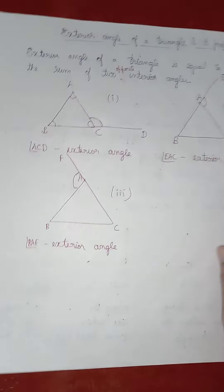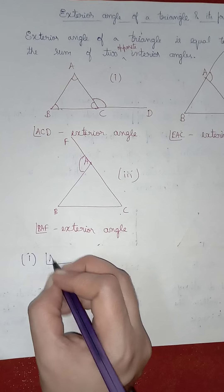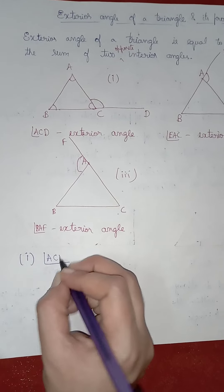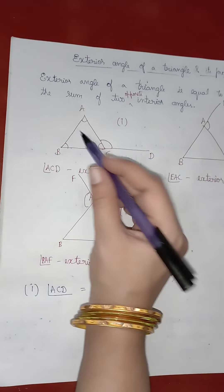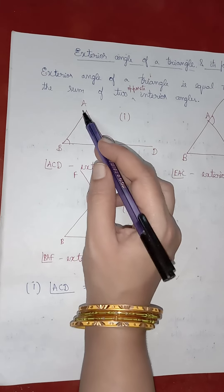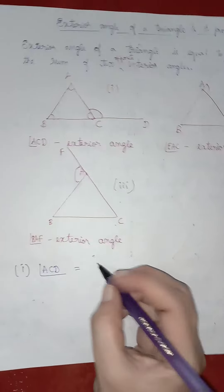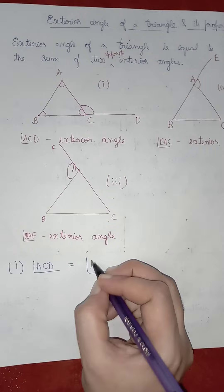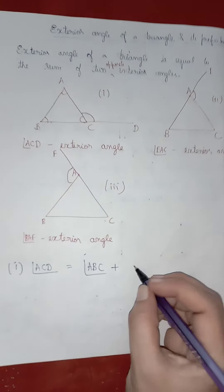In figure 1, the exterior angle is angle ACD. That is equal to the sum of the interior opposite angles, which are angle ABC plus angle BAC.